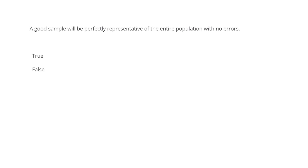Next question: A good sample will be perfectly representative of the entire population with no error - true or false? Obviously it is false. It is not possible that a random sample, even if unbiased, will have no error with respect to the entire population - there will always be a little bit of error. If we want zero error, the sample size has to be close to the population size, and then there is no point in taking a sample. So the correct answer is false.